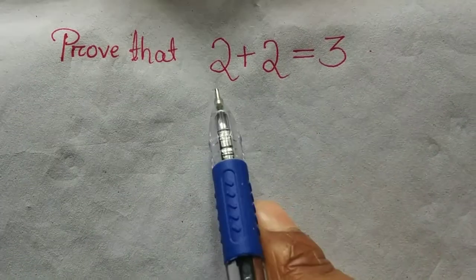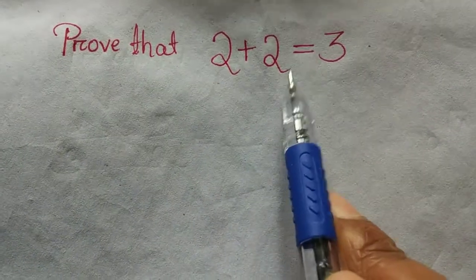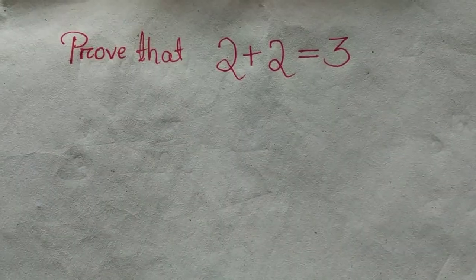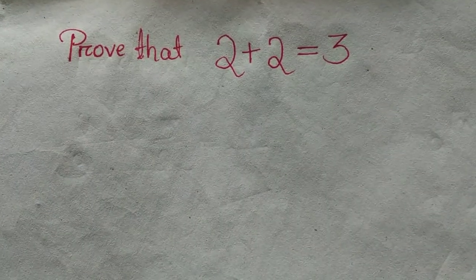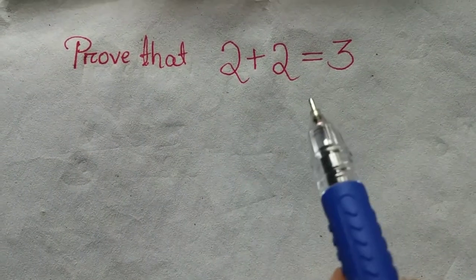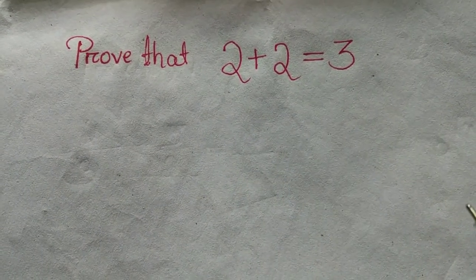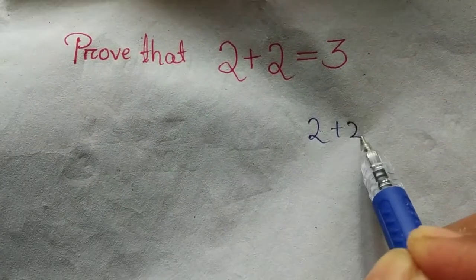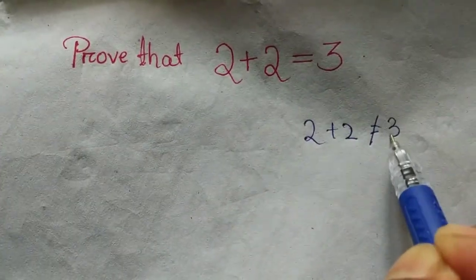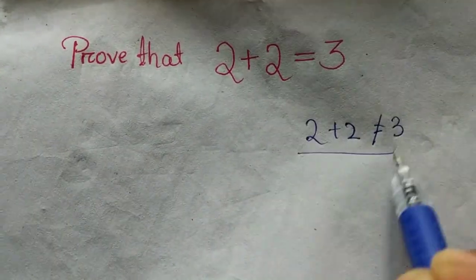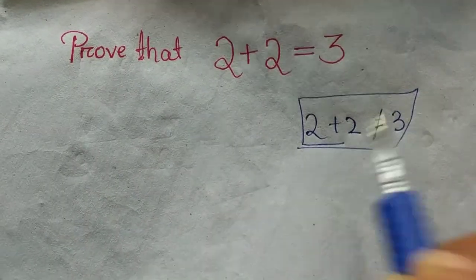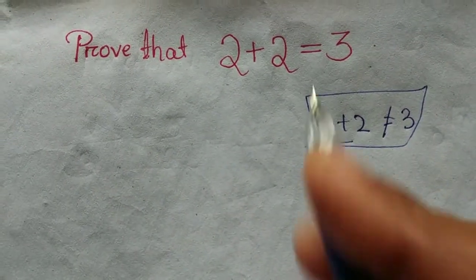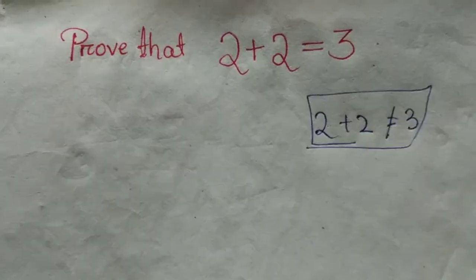Prove that 2 plus 2 is equal to 3. Mathematics says 2 plus 2 is equal to 4 — 2 plus 2 is not equal to 3. Mathematics, prove that. How do we prove that 2 plus 2 is equal to 3?